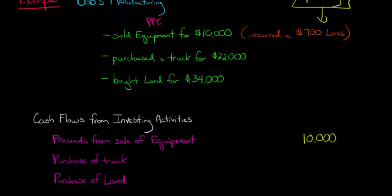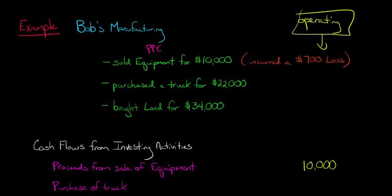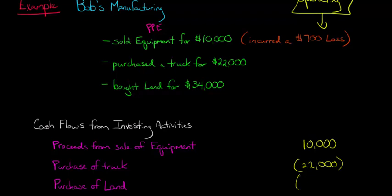Because we purchased it, that's a negative cash outflow. We put that in parentheses to emphasize this is a use of cash. We used $22,000. The same with the land—it was $34,000, but we paid that, so we have negative $34,000.